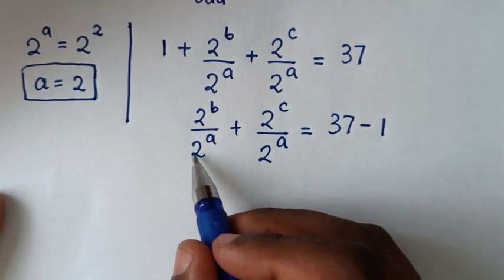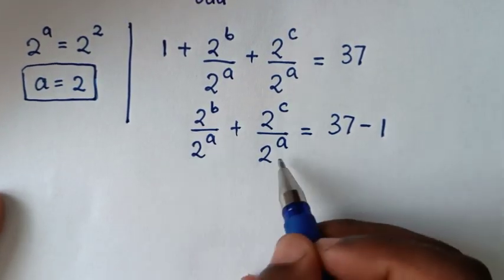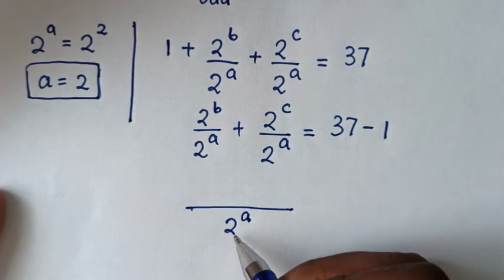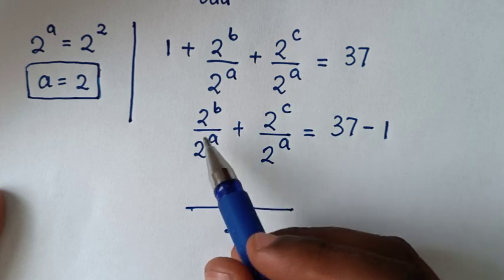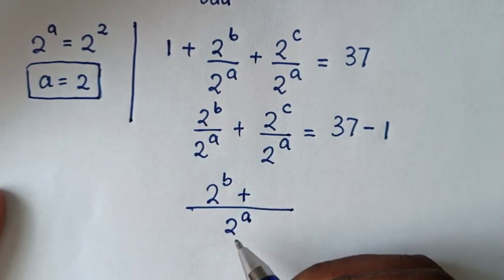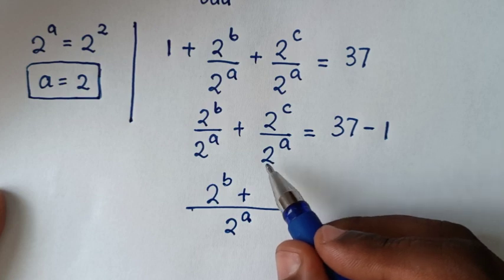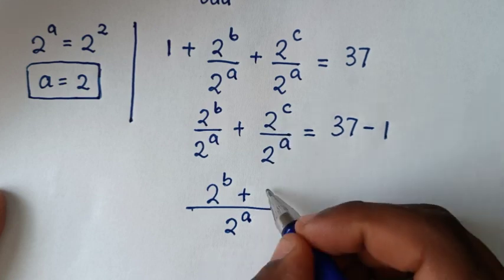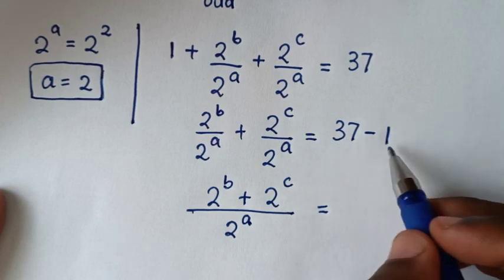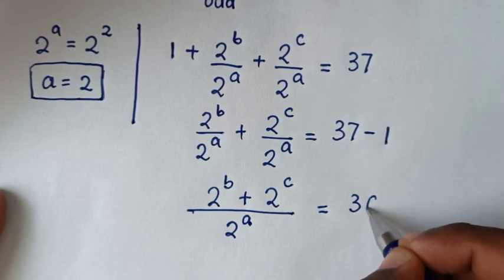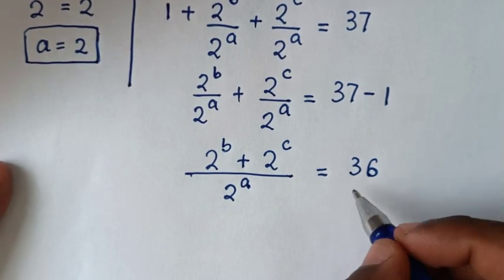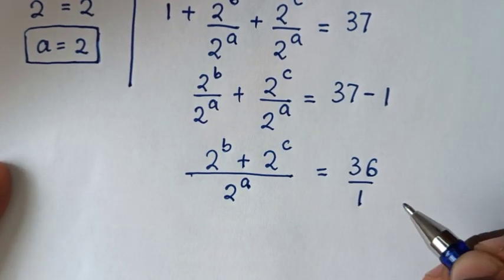Then in the next step, 2 power a is common, so it will be 2 power a divided by 2 power a is 1, times 2 power b, it is 2 power b, plus 1 times 2 power c, it is 2 power c. Is equal to 37 minus 1, which is 36. So 36 is the same as 36 over 1.